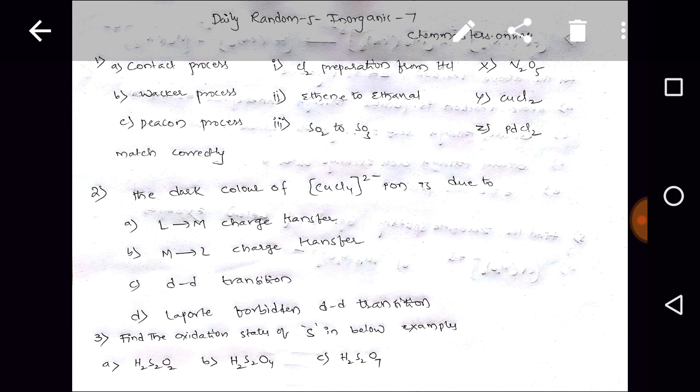Second question: the dark color of copper tetrachloride anion is due to A ligand to metal charge transfer, B metal to ligand charge transfer, C d-d transition, D Laporte forbidden d-d transition.